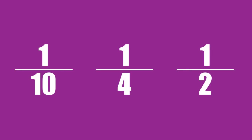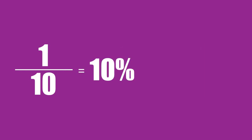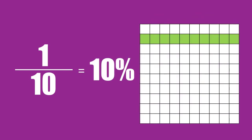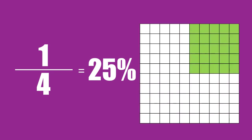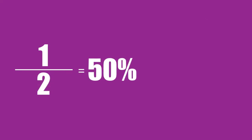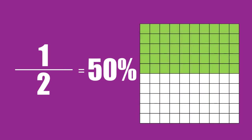Some common fractions that you might see are one-tenth, one-quarter, and one-half. One-tenth is the same as ten percent because ten goes into a hundred ten times. One-quarter is the same as twenty-five percent because twenty-five goes into a hundred four times. And a half is the same as fifty percent because fifty goes into a hundred two times.